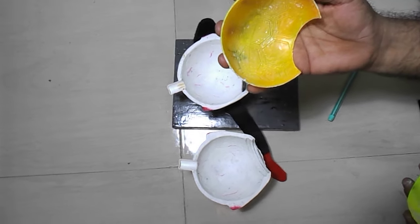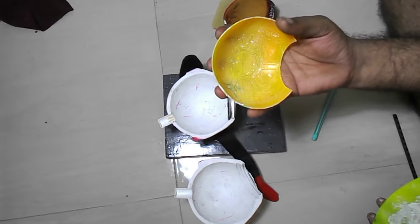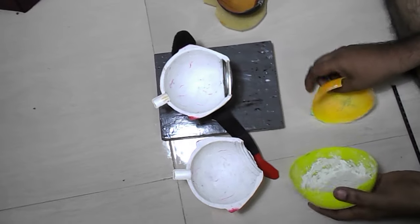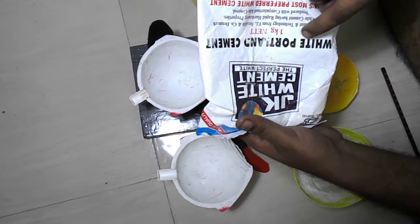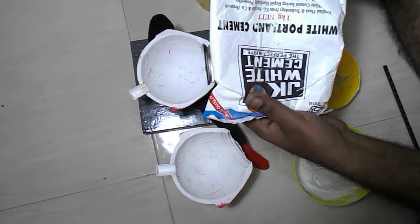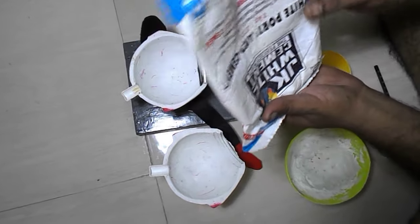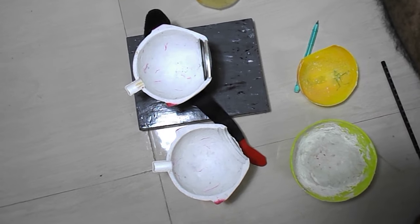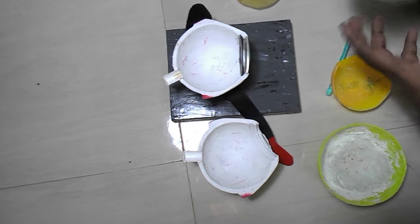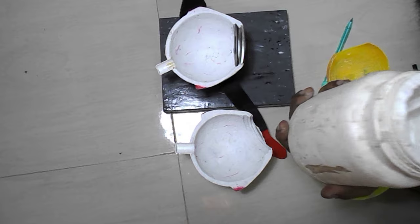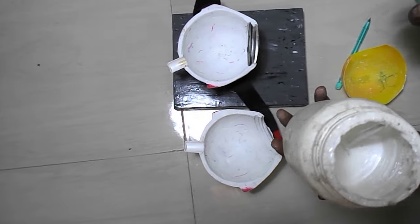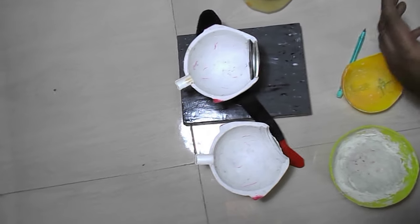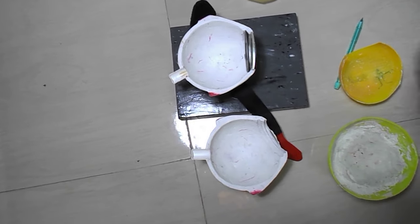Then I took this white cement, white Portland cement, about one kilo, and then I mixed it well with PVA glue, or fevicol that we normally call.